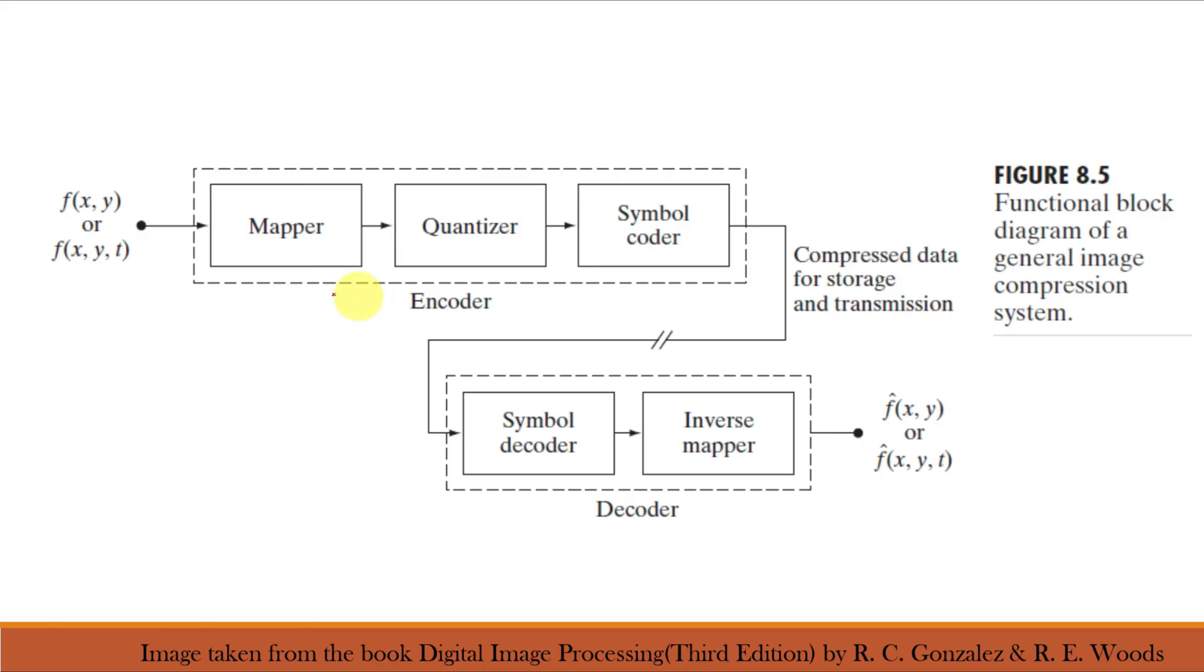This figure shows the image compression model. This is used for example by WhatsApp when you send images or videos. WhatsApp uses lossy compression, say your original image is 3 MB, then the received image by the recipient would be around 100 KB.